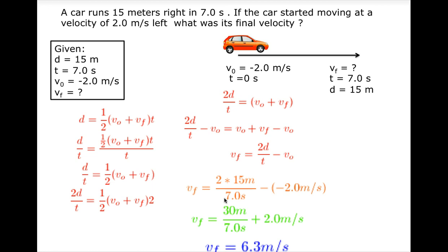Then we substitute the numbers into this equation: 2 times 15 meters divided by 7.0 seconds minus negative 2.0 meters per second. Then we have 30 meters divided by 7.0 seconds plus 2.0 meters per second.